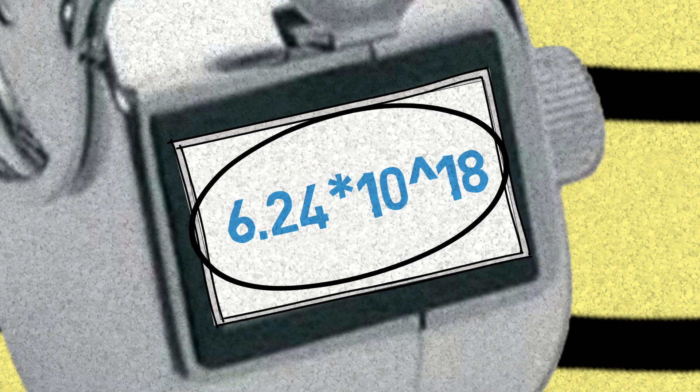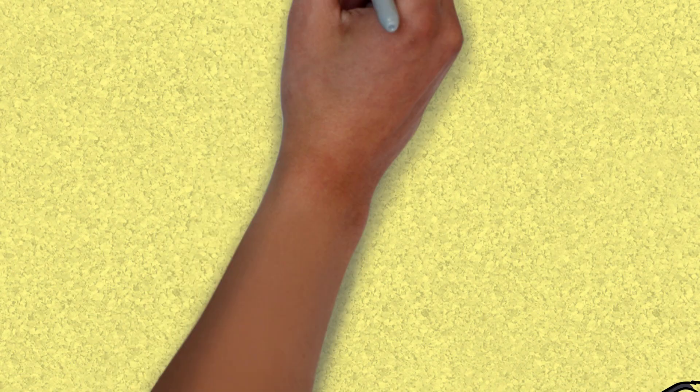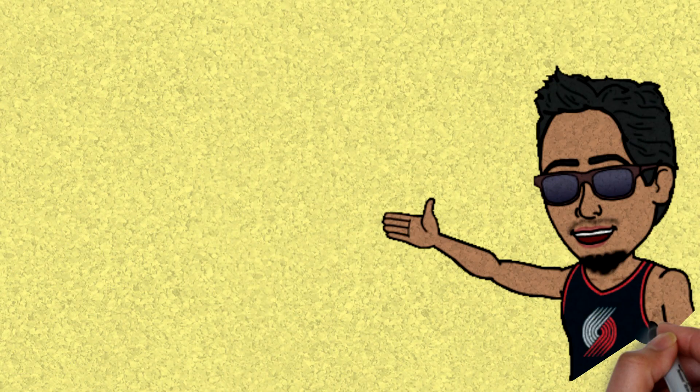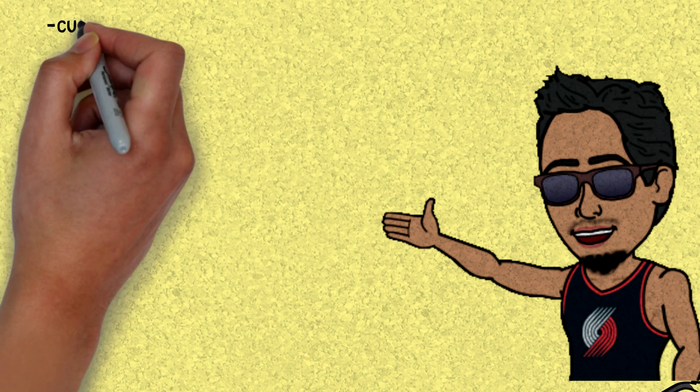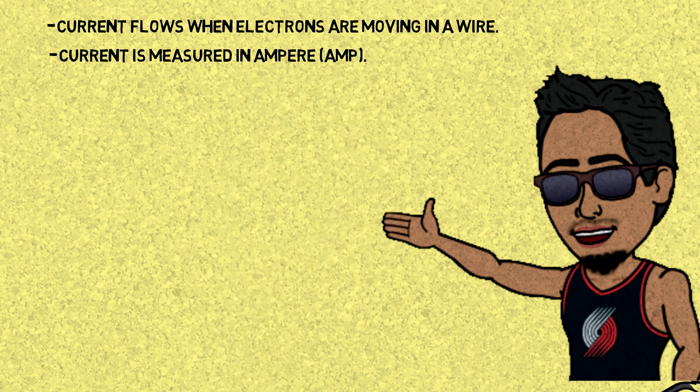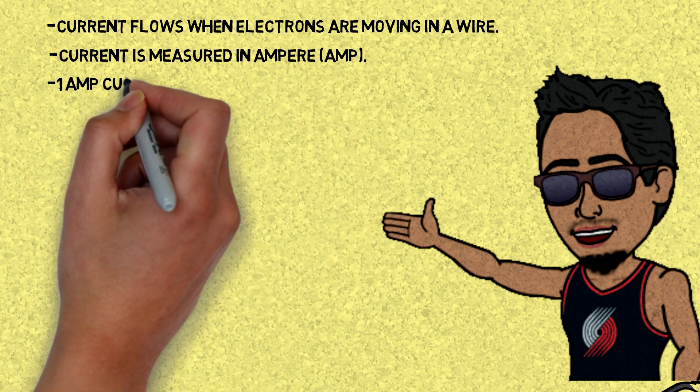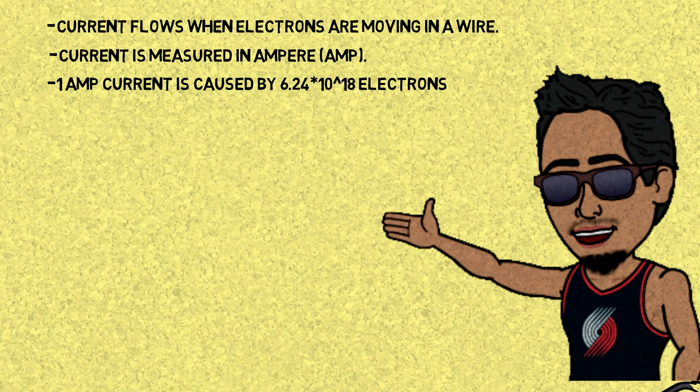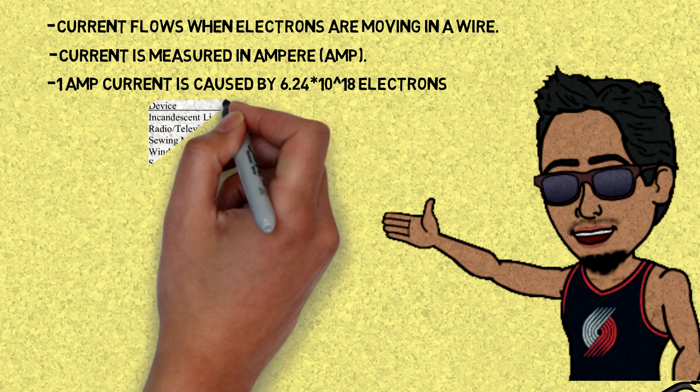So let's quickly recap. Current flows because electrons are moving. Current is measured in amps. One amp is when 6.24 times 10 to the 18th power electrons move through a point in one second. And that's it.